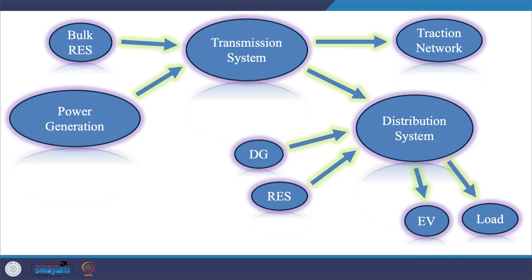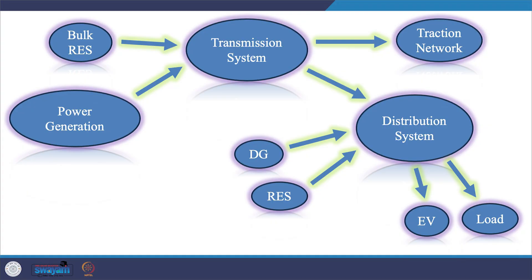Please note, out of these three kinds of loads and generations we have just now talked about: electric traction networks are usually directly fed from the transmission network; bulk renewable energy sources are also directly injecting power to the transmission network. Although electric vehicle loads are usually connected to the electric distribution network, because of their unpredictability it is just not possible to connect these electric vehicle loads in a balanced manner in any electric distribution system.